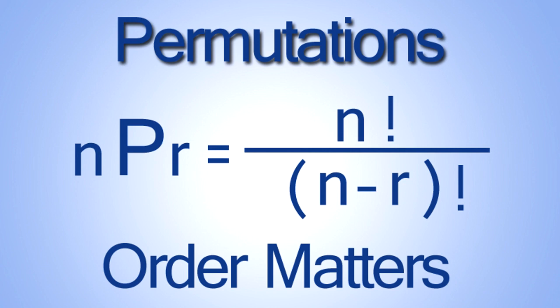Thus order matters in permutations. Permutation notation is always written as little n, capital P, and little r: nPr.